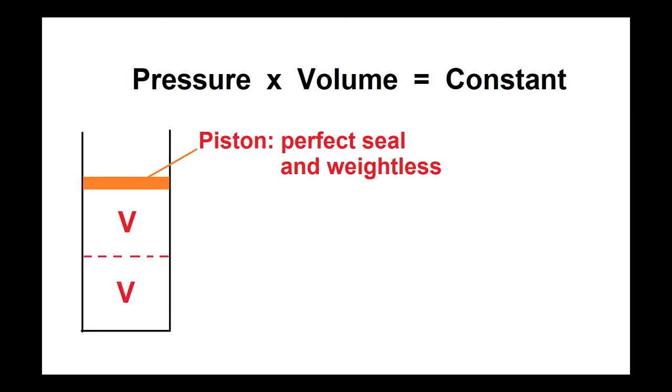Here you can see a picture of a cylinder with a piston on the top, and this is an ideal piston that has a perfect seal and it is weightless. Below the piston is a volume called V, and then there's a dashed line with another V below it. That dashed line is imaginary so that you can see the entire volume below the piston is 2V.